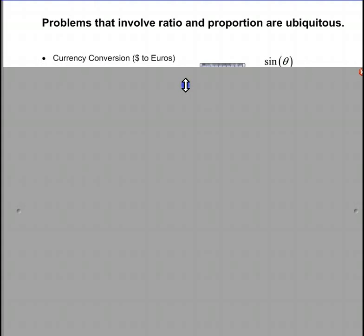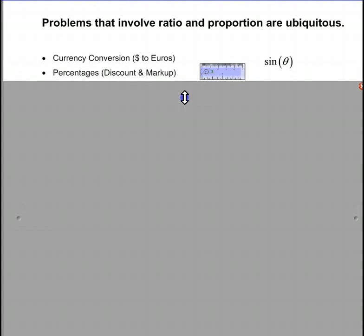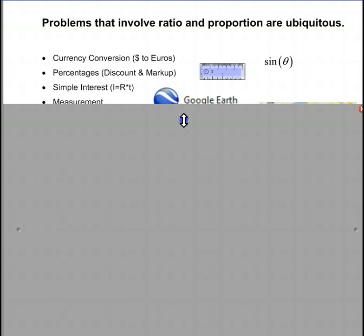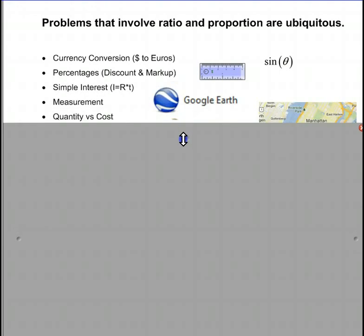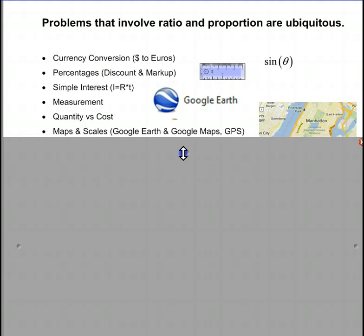We see them in currency conversion, percentages, discount and markup, simple interest, measurement, quantity versus cost, maps and scales including Google Earth, Google Maps and GPS.